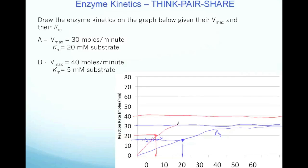And you take your line from zero, bring it through your Km, and it slowly will reach basically your Vmax. And so this is B.